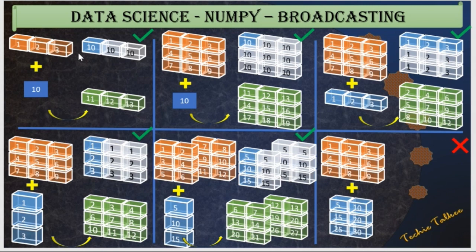How broadcasting works here is that NumPy conceptually considers another array with one row and three columns where all the values are 10. NumPy broadcasts the value 10 across all index values of the second array. It then becomes a simple addition of two 1D arrays: 1 plus 10, 2 plus 10, and 3 plus 10, giving the result 11, 12, and 13.